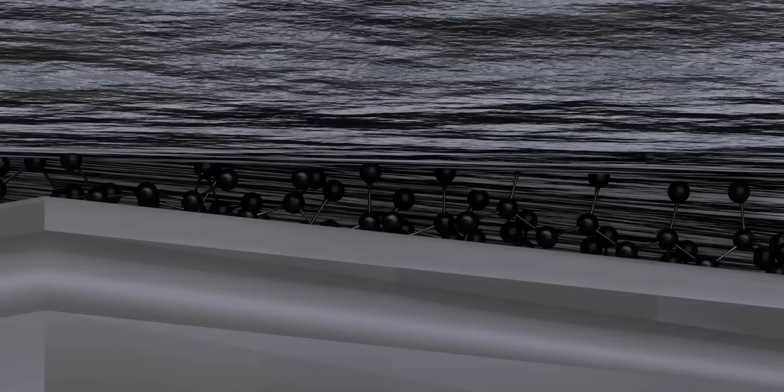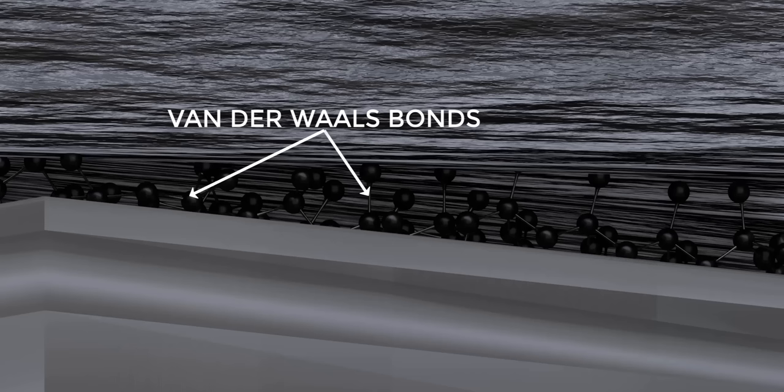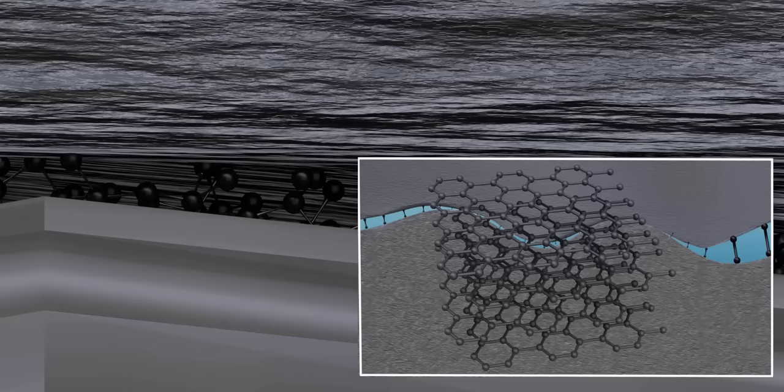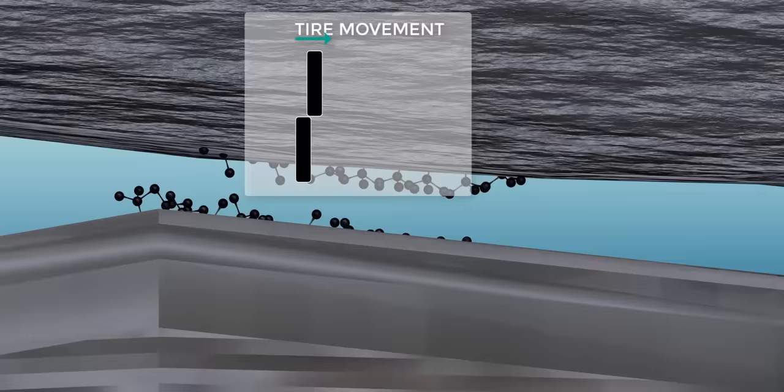Such cases lead to generation of another interesting region called the adhesion region. In an adhesion region, the molecules of the tire and road surfaces form surface bonds called van der Waals bonds, which are weak in bond strength. You can find the same types of bonds between the graphite layers of a pencil lead. The bonds in the adhesion region are temporary — due to the movement of the tire, these bonds have to get broken. During this process, the force generated by the road molecules on the tire molecules will be in the same direction as sliding frictional force.